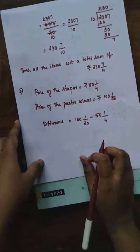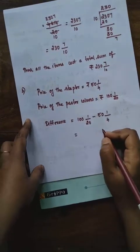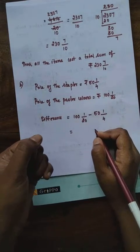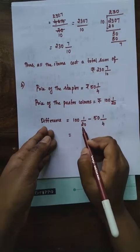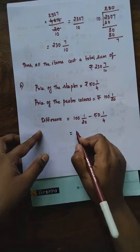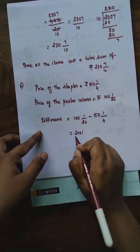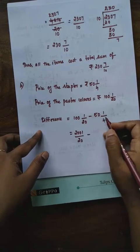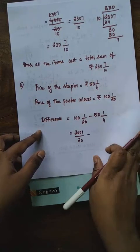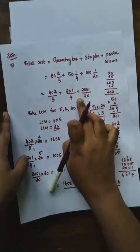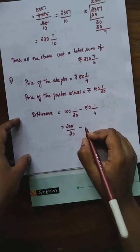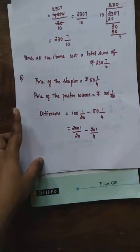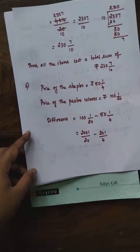Here the values are in mixed fraction form. First convert into improper fractions. 100 × 20 = 2000, plus 1 = 2001. So poster colors = 2001/20. For the stabler: 50 × 4 = 200, plus 1 = 201. So stabler = 201/4. Now we have 2001/20 minus 201/4.